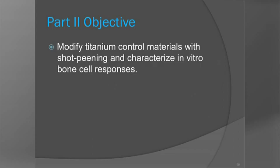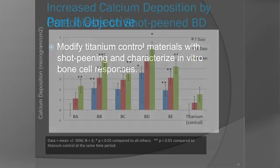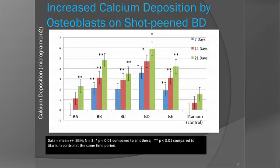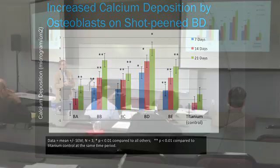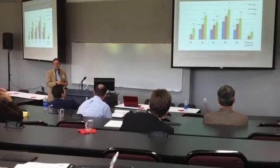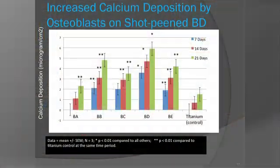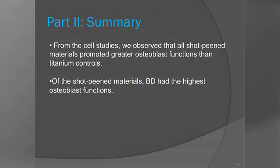Part 2 was really to look at these materials in the presence of bone cells. This is an example of what we're seeing — calcium deposition. One of the most important functions of a bone cell is to deposit calcium, which composes bone. In these studies for various periods of time from 7 to 21 days, every single shot peening material had more calcium deposition from bone cells than the titanium control. And the one that had the most was the BD sample — the one with the highest nanoscale roughness and the highest surface energy. We believe we've correlated a shot peening procedure that can maximize nanoscale surface features to increase responses from bone cells.